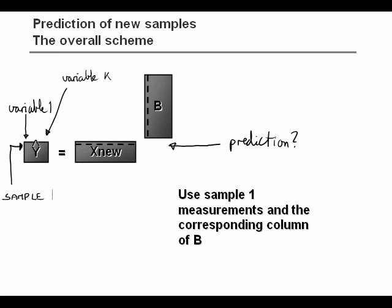Well, we simply take the elements in X and multiply them by the corresponding column in B and sum them. And that will give us our prediction of the first variable in Y for the first sample. So we take variable one times its regression coefficient, multiply those two, and then we add the next one and the next one, etc. And then we have the prediction.